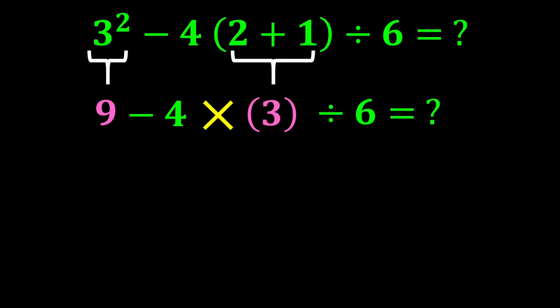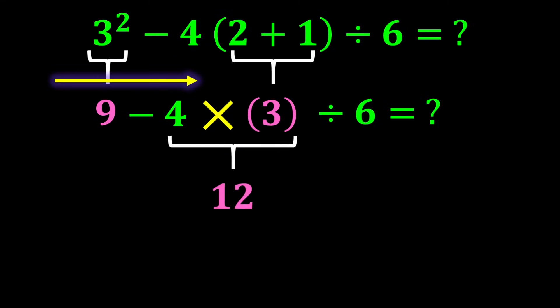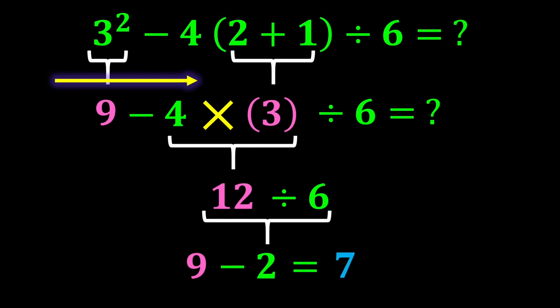When a number is placed next to parentheses, it means multiplying that number by the expression inside the parentheses. In this expression there is subtraction, multiplication, and division. Since multiplication and division have higher priority than subtraction, we perform them first. Moving from left to right, we reach multiplication first, so we perform multiplication first, then division, and finally subtraction. 4 times 3 gives us 12, and 12 divided by 6 gives us 2. Finally, 9 minus 2 gives us 7.